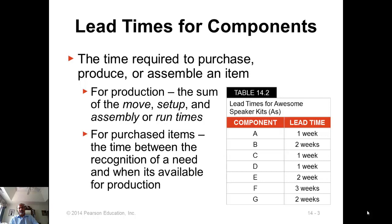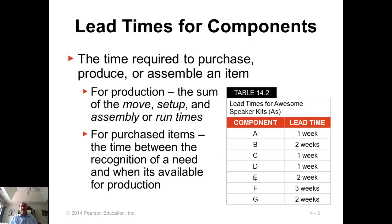Here is an example of the bill of materials we saw in the previous video. For each of these items — A being the top-level item and the others being components — if these are the lead times, one thing we can do is figure out what is the overall lead time to producing the final product A. Remember, that is not simply a sum of the lead times, because some of these items can be produced in parallel.